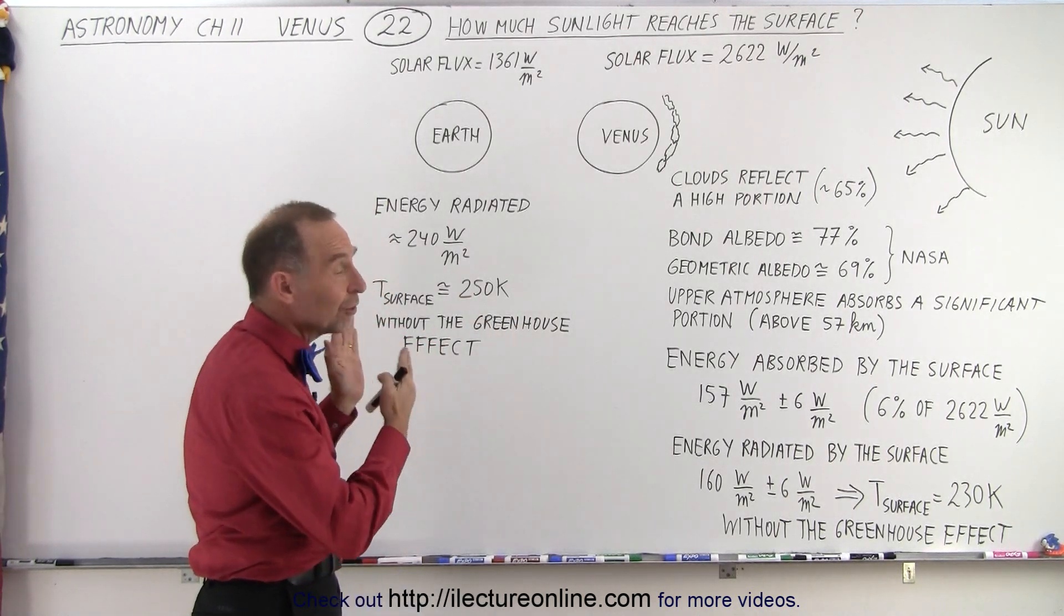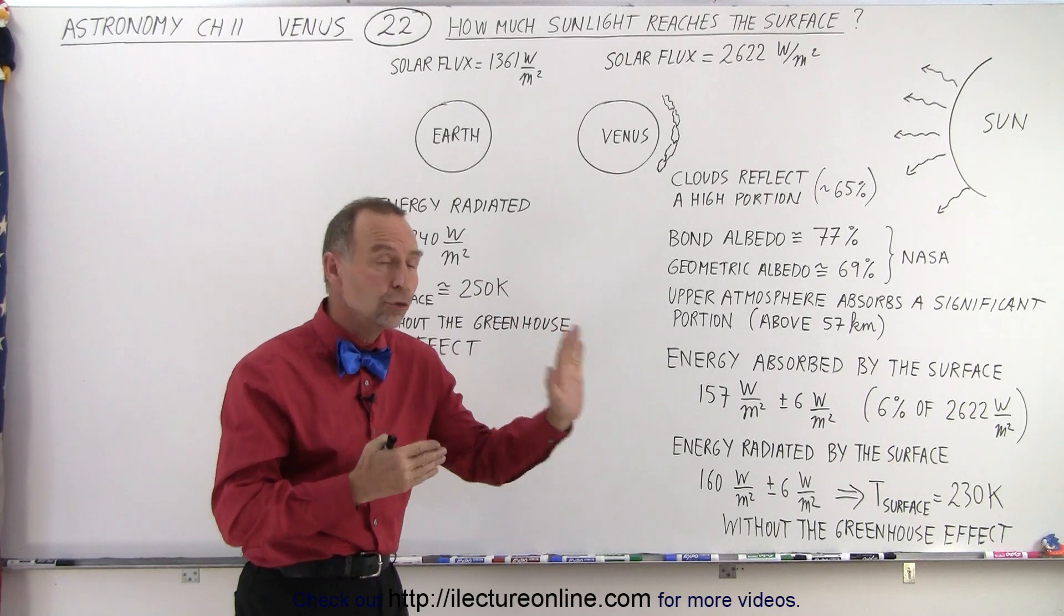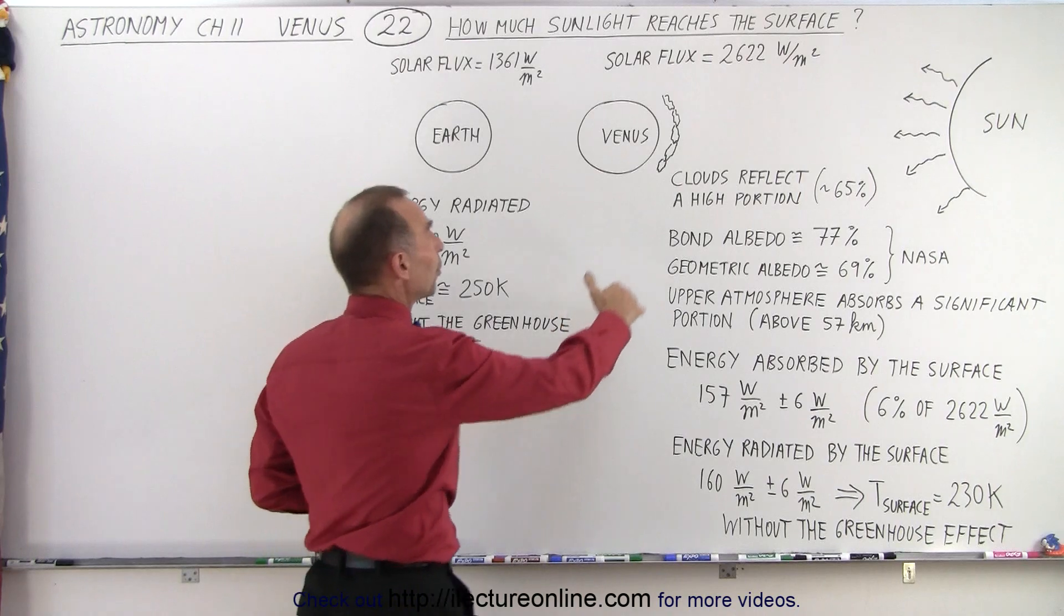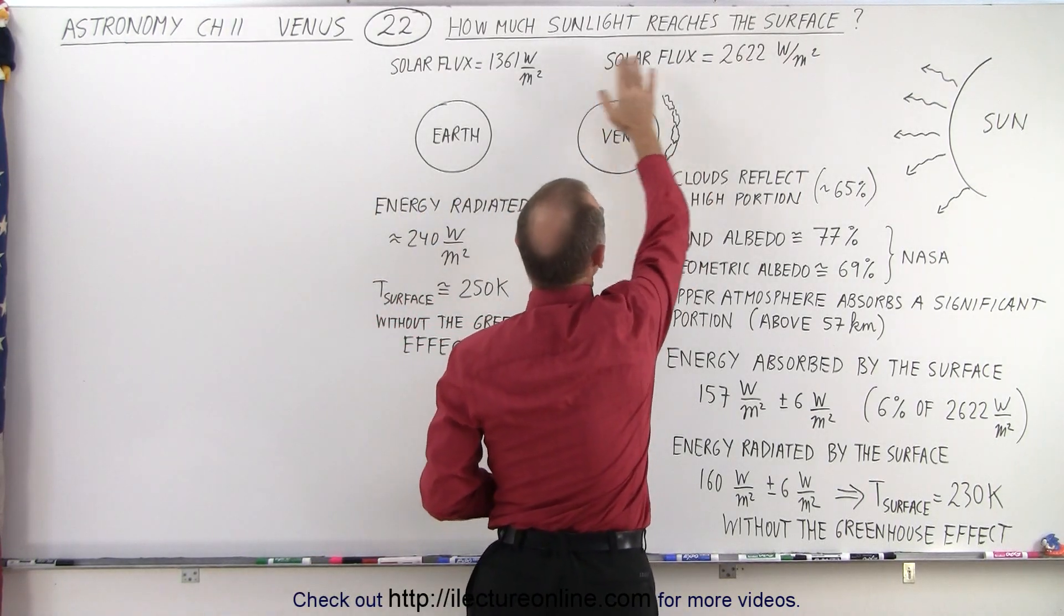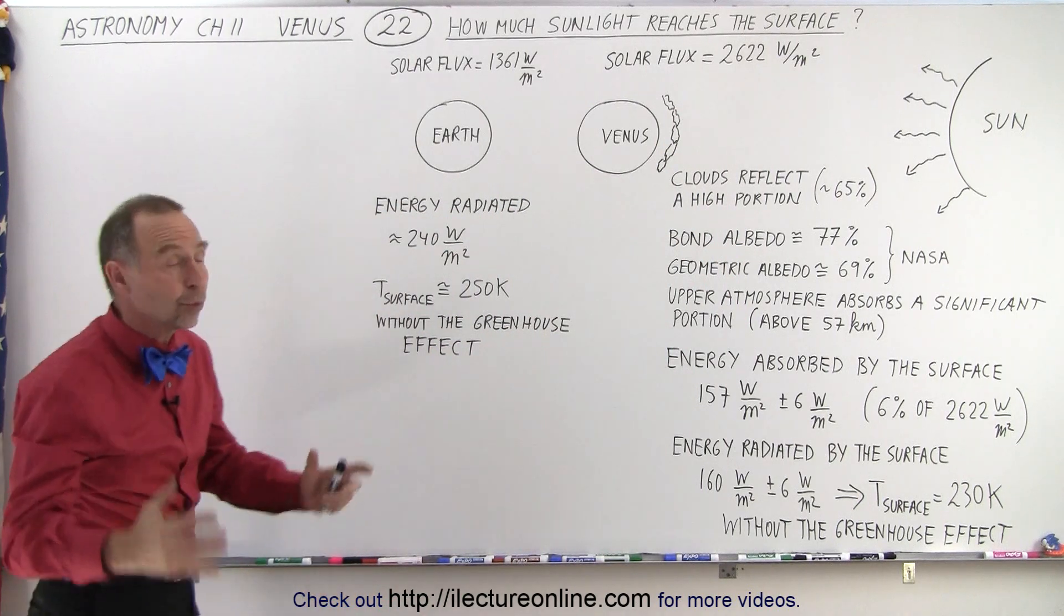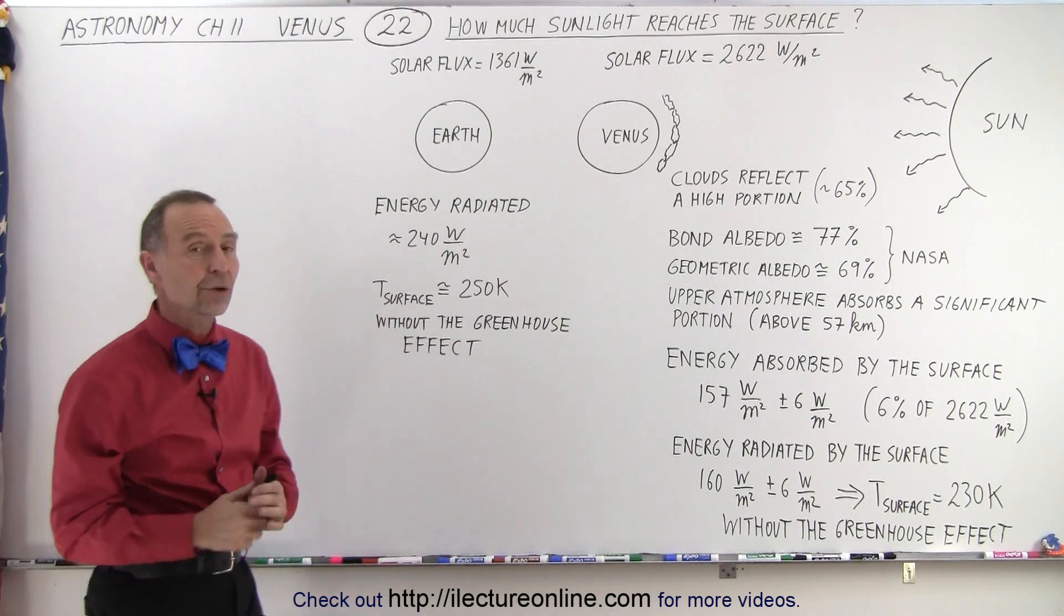Well, it turns out because Venus is so much closer to the Sun, about 70% the distance from the Sun to the Earth, it receives a lot more sunlight. Almost twice as much energy from the Sun is received by Venus per square meter as compared to where the Earth is.